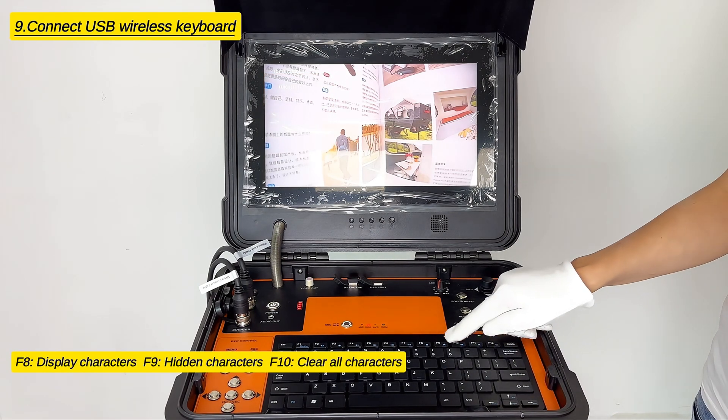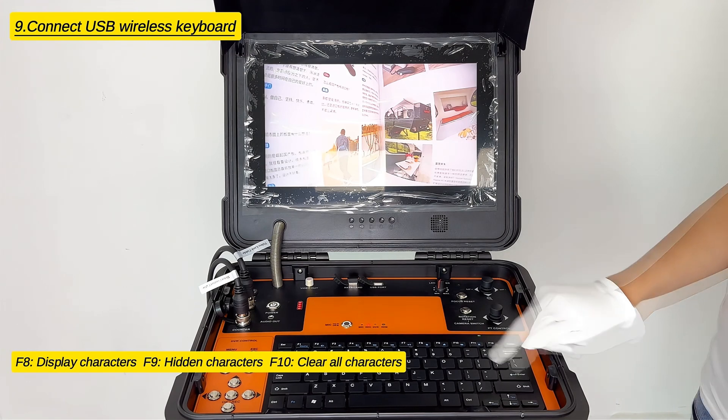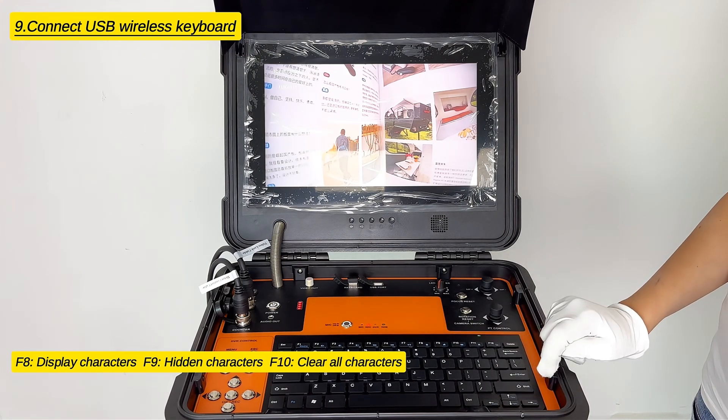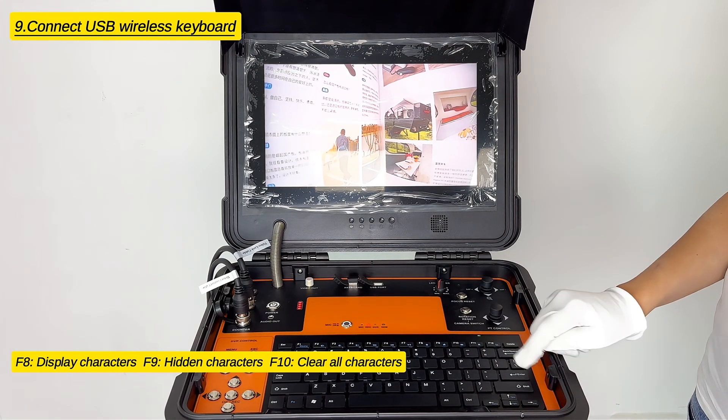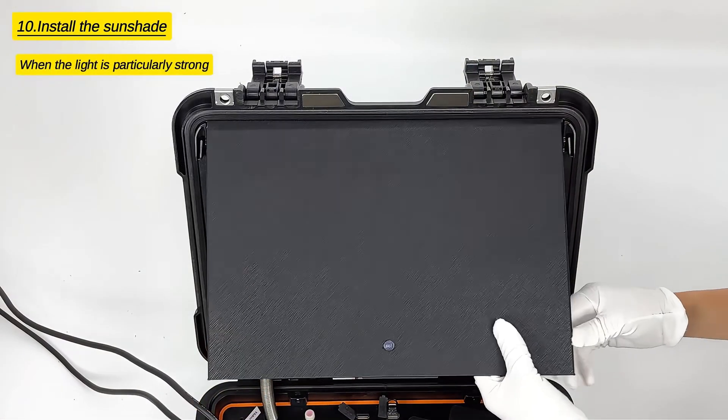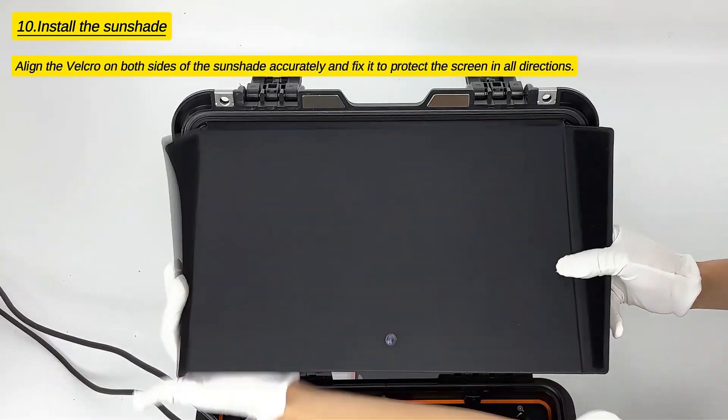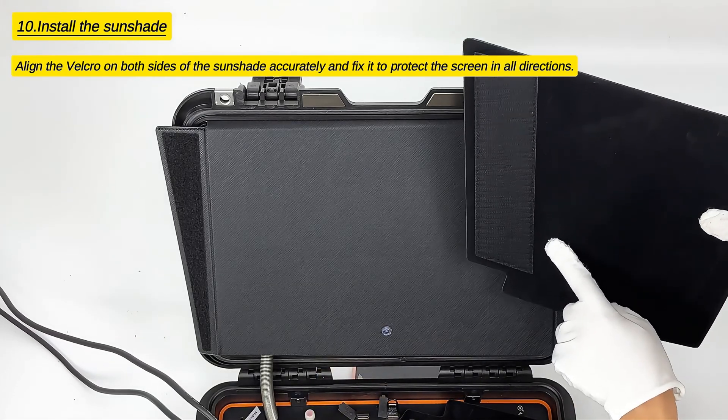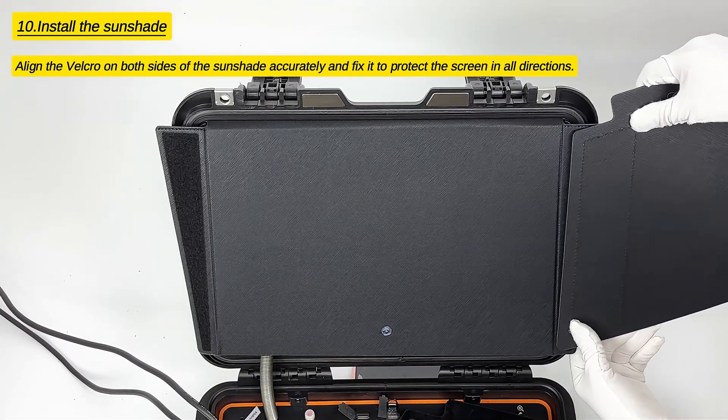F8 displays characters, F9 hides characters, F10 clears all characters. When the light is particularly strong, align the velcro on both sides of the sunshade accurately and fix it to protect the screen in all directions.